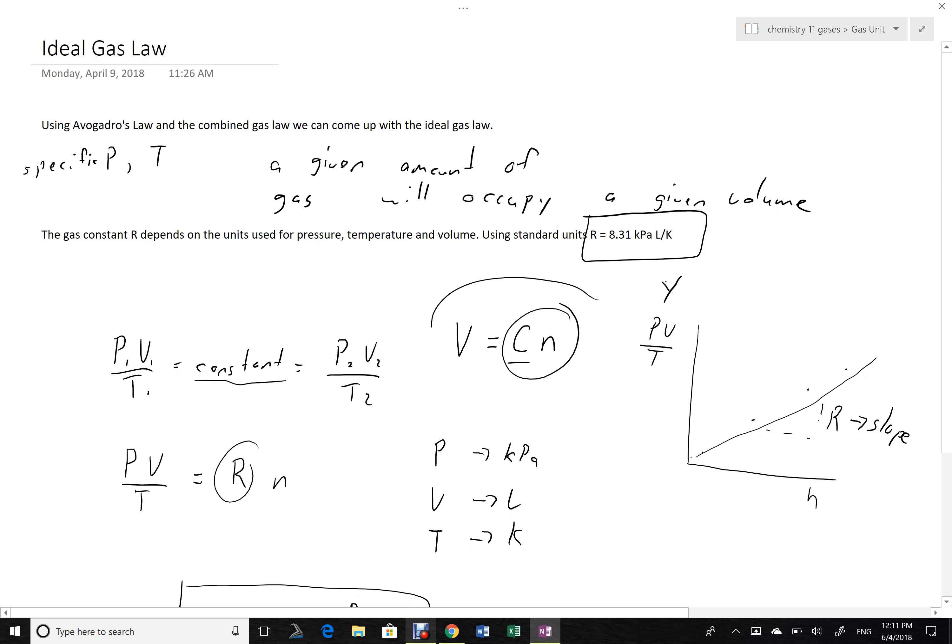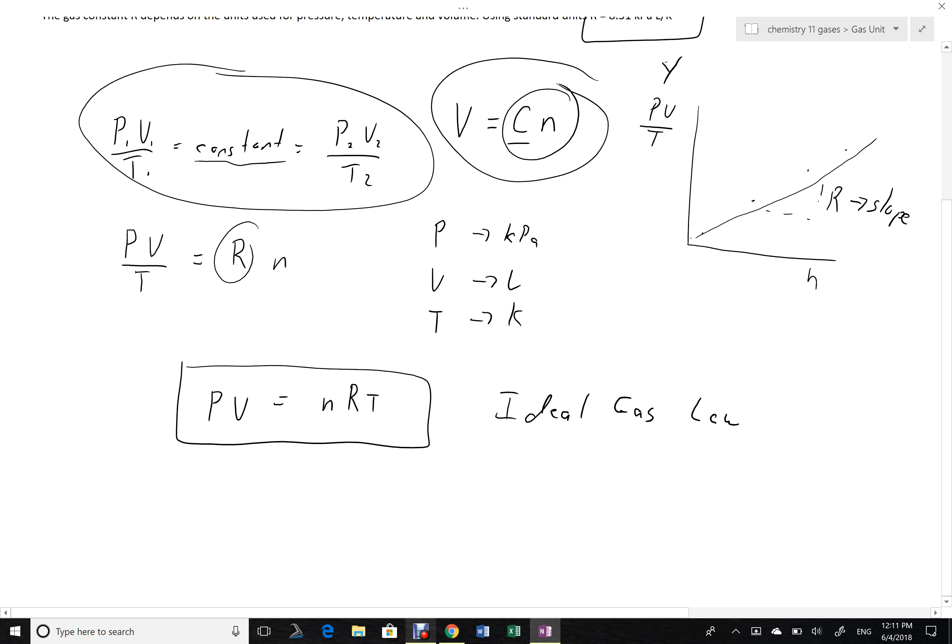So combining Avogadro's hypothesis and what we already knew about the relationship between pressure, volume, and temperature, we can come up with the ideal gas law, which allows us to predict moles for any pressure, temperature, and volume. So we don't have to use SATP or STP anymore.